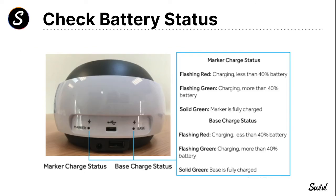Looking at the back of the robot, you'll see a marker charge status LED and a base charge status LED. For the marker charge status: flashing red means less than 40% battery remaining; flashing green means it's charging or more than 40% is available; solid green means fully charged. The base charging status follows the same pattern: flashing red means charging with less than 40%, flashing green means charging with more than 40%, and solid green means fully charged.